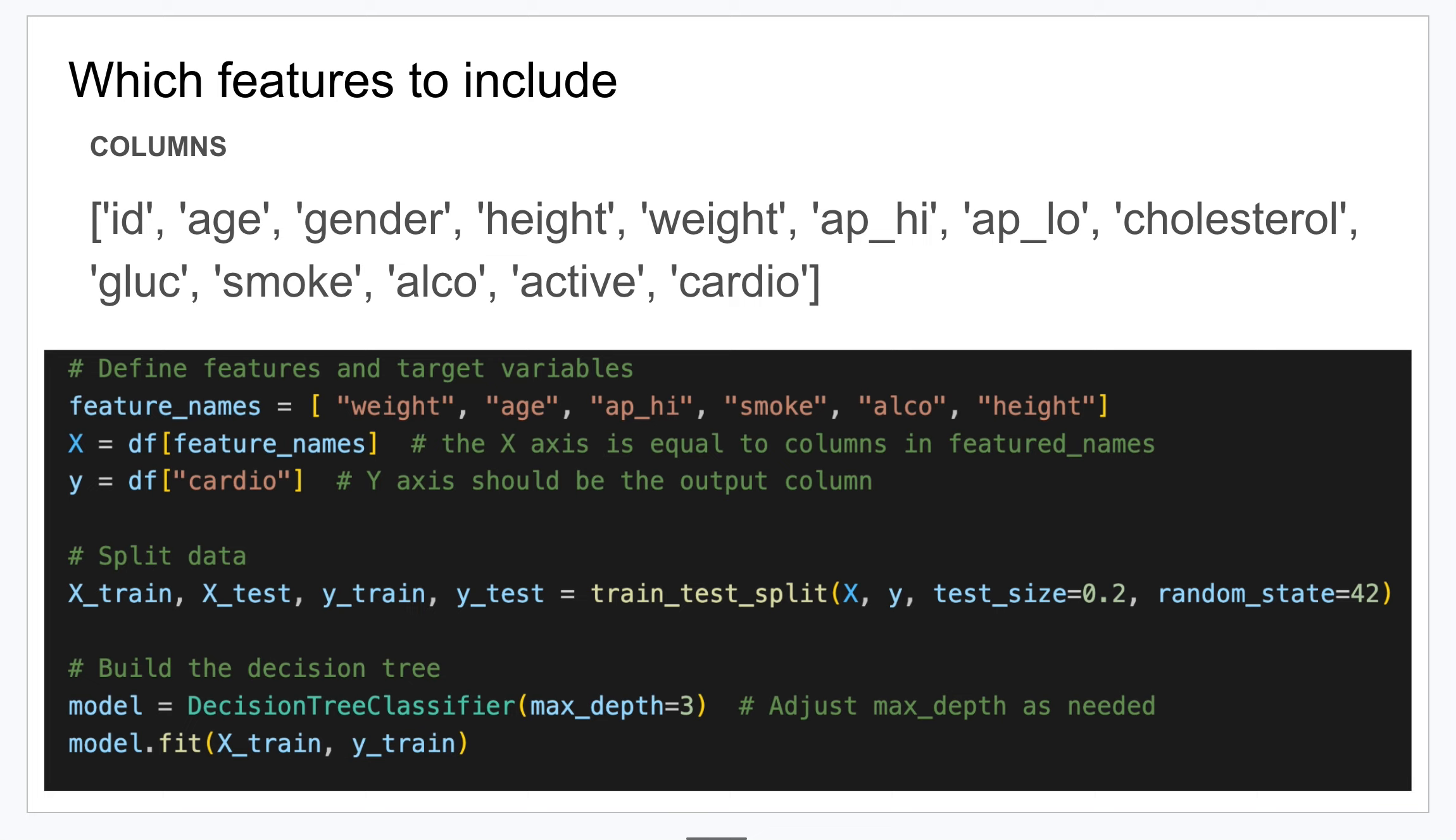What that looks like is you put the columns in here and make sure these names match exactly as they appear in your database as the column headers. Then the y here is actually whatever your outcome column is. In our first database that was called cardio and that refers to whether someone has heart disease or not - it was like a one or a zero.